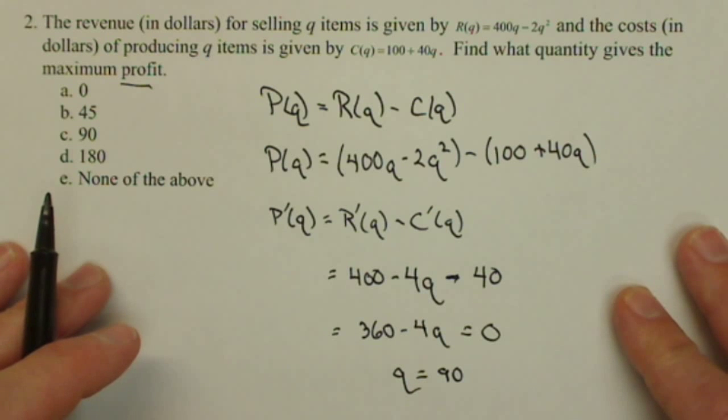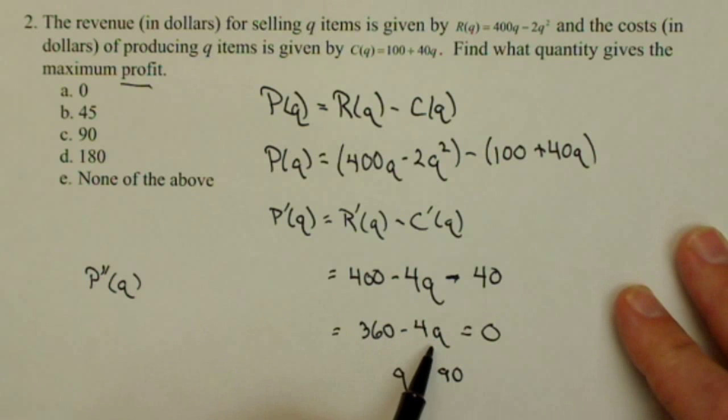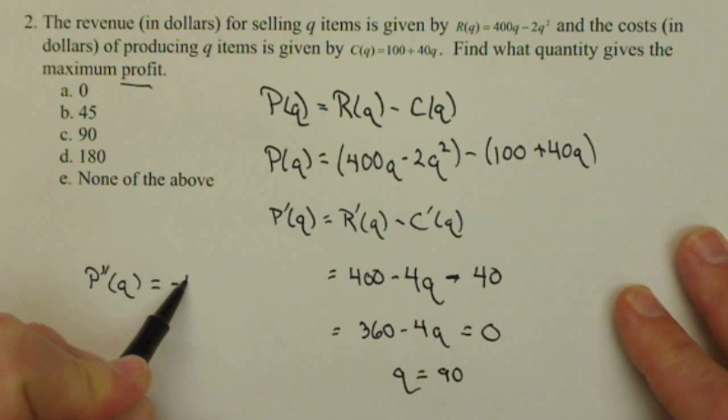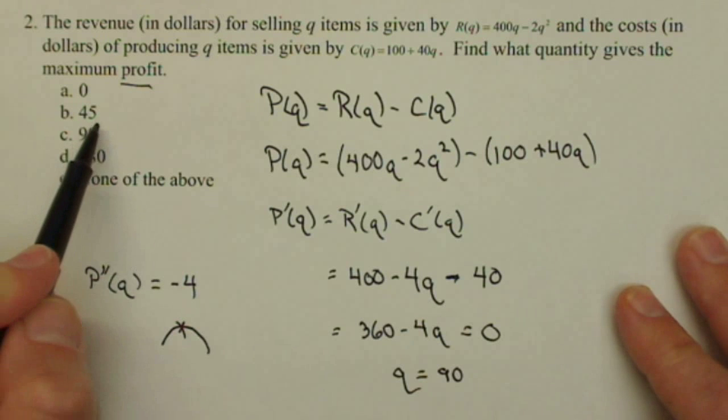Now we should get in the habit of checking whether or not this is a max or a min. To do that, we want to check the second derivative of the profit. Well, our first derivative is here. Our second derivative, which is the derivative of this, is just -4. Remember what that means: if the second derivative is negative, it means it's concave down, which means that if we have a critical point, it's going to be a max by our second derivative test.